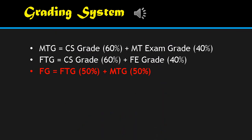You also have a grading system, which is very important for you to know. For your midterm standing: class standing grade is 60% plus midterm exam grade of 40%, totaling 100%. For your final tentative grade: class standing is 60% and the final exam is 40%. Your final grade is computed as: final tentative grade (50%) plus midterm tentative grade (50%), averaged together.